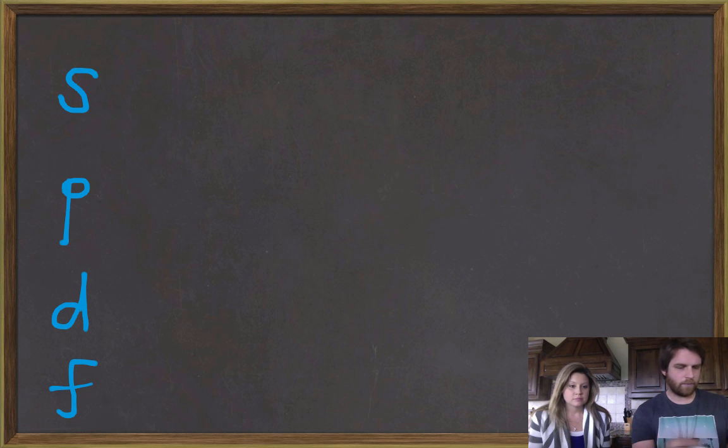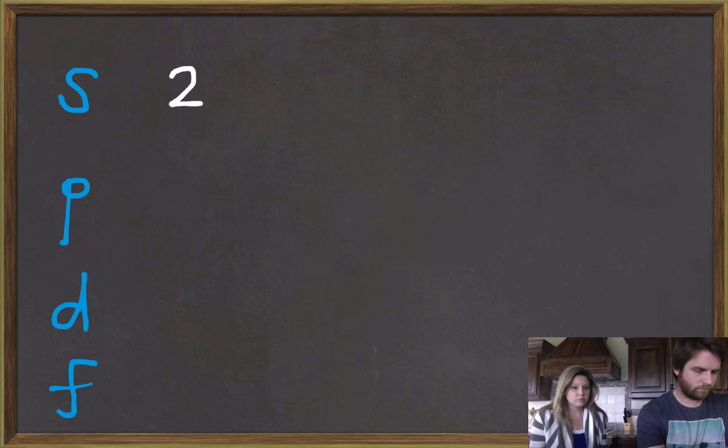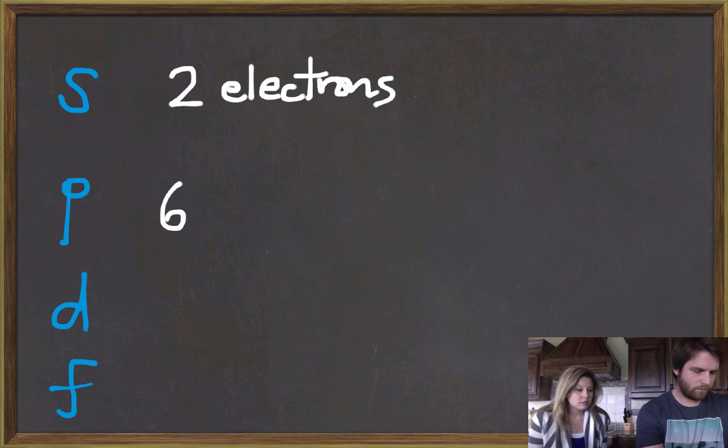So the s orbital holds two electrons. It's your smallest orbital. And your p orbital holds six.